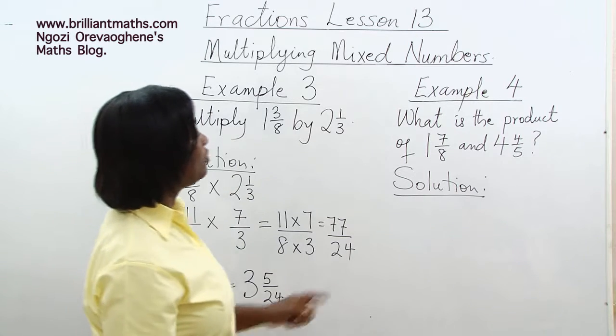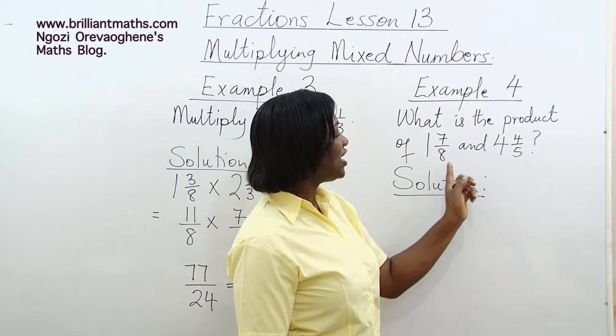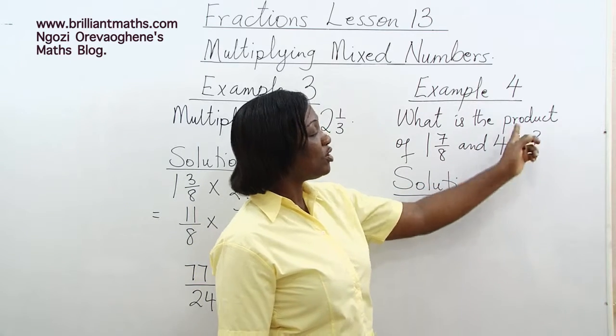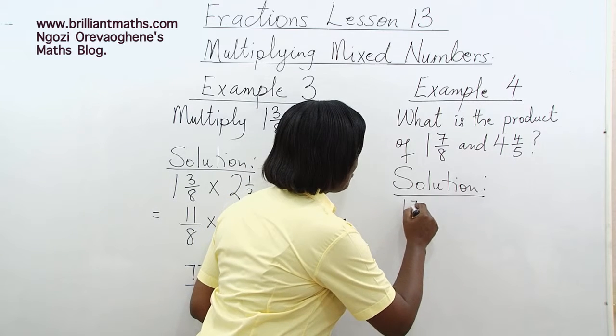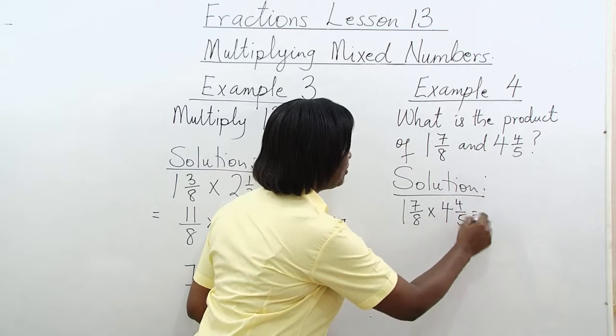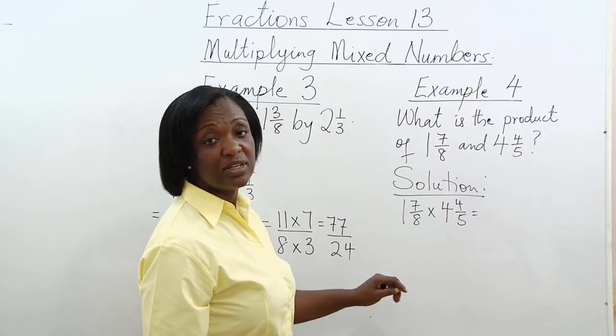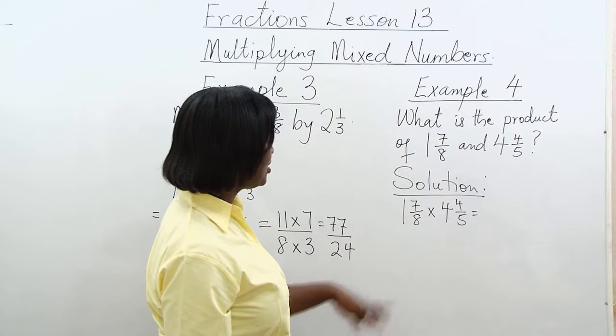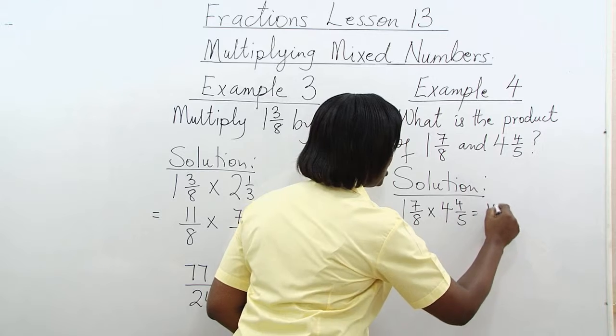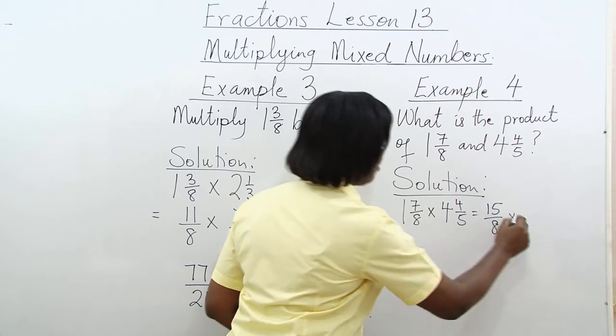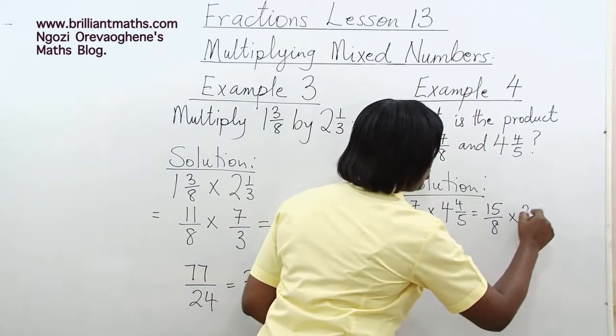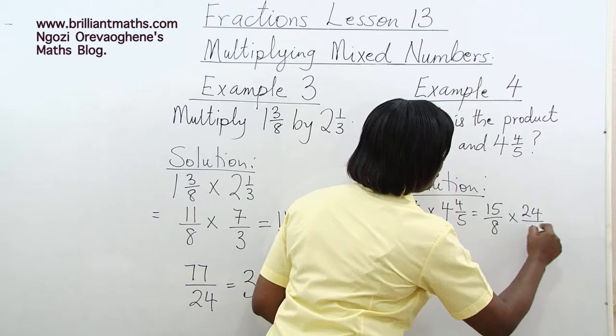Example 4: What is the product of 1 7 eighths and 4 4 fifths? Product means multiply or times. We write the question again: 17 over 8 times 4 4 fifths. They are mixed numbers, so we change them to improper fractions. 8 times 1 is 8 plus 7 gives us 15 over 8 times 5 times 4 is 20. 20 plus 4 is 24 over 5.